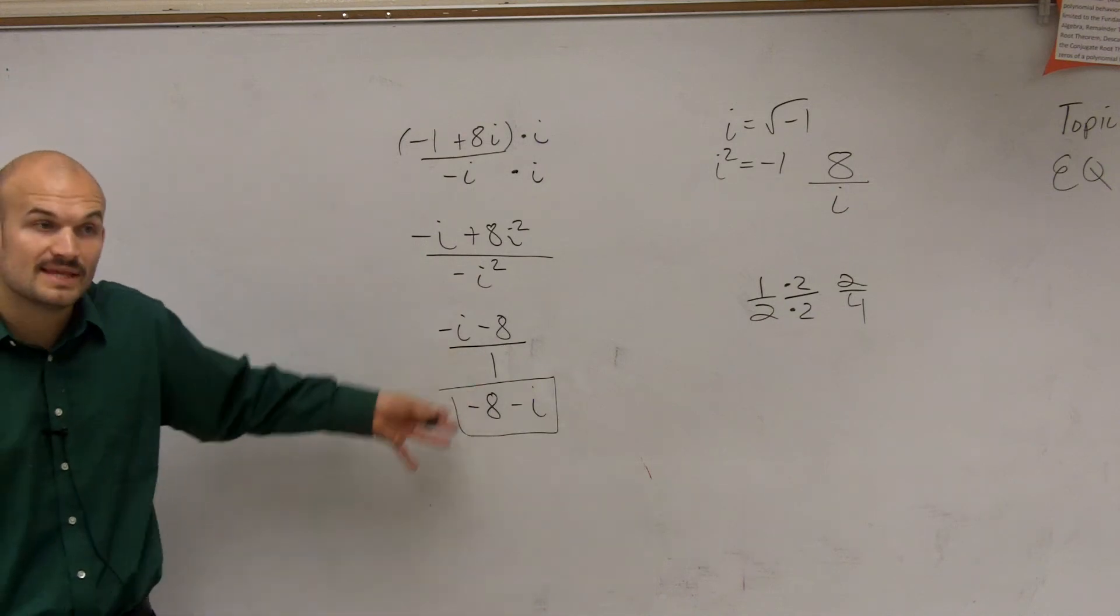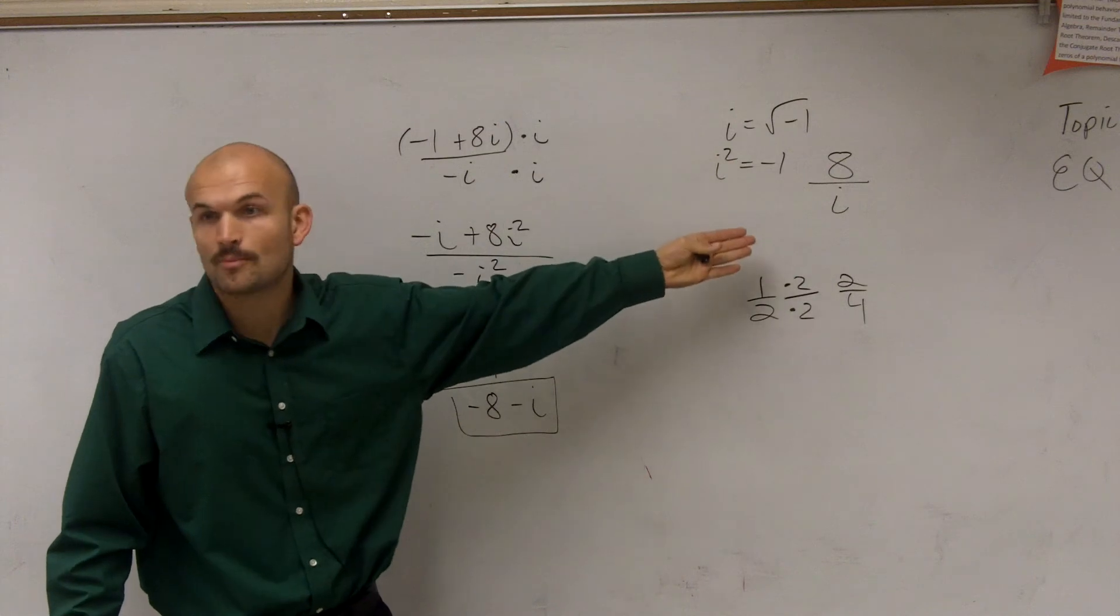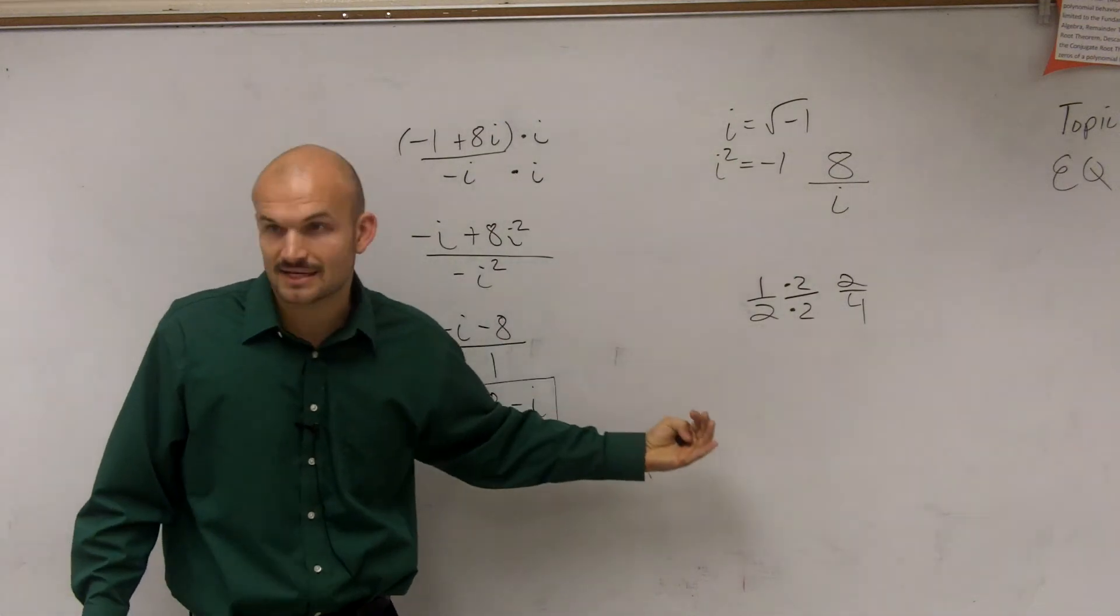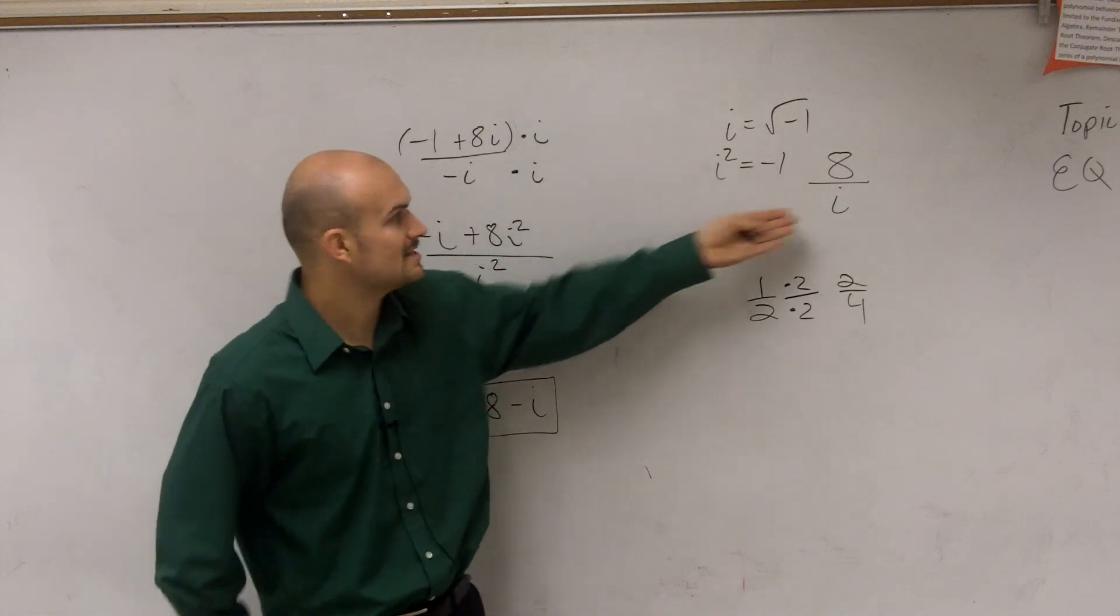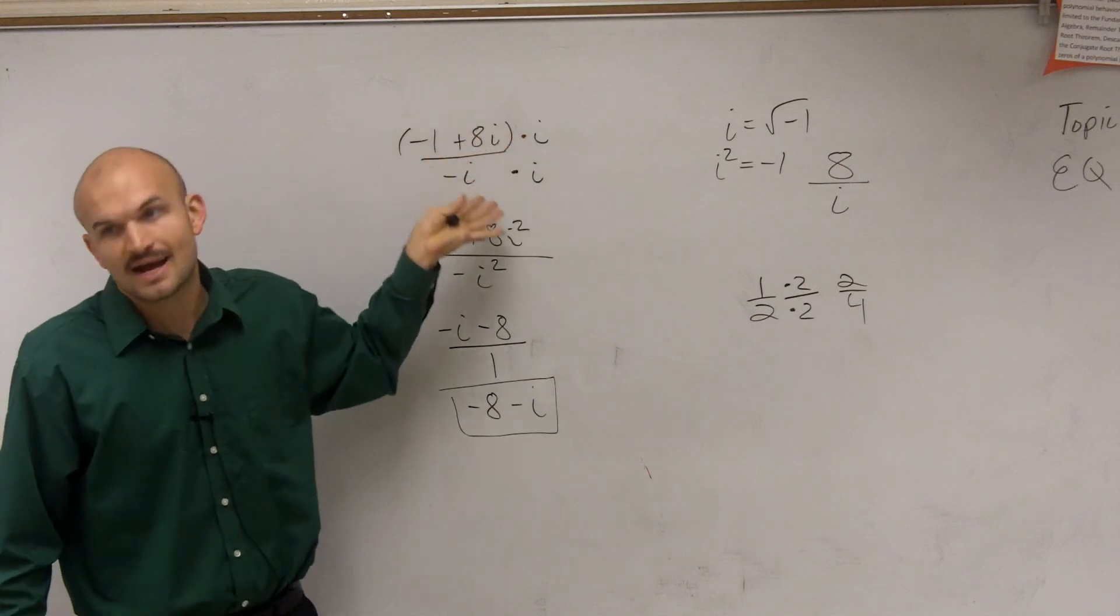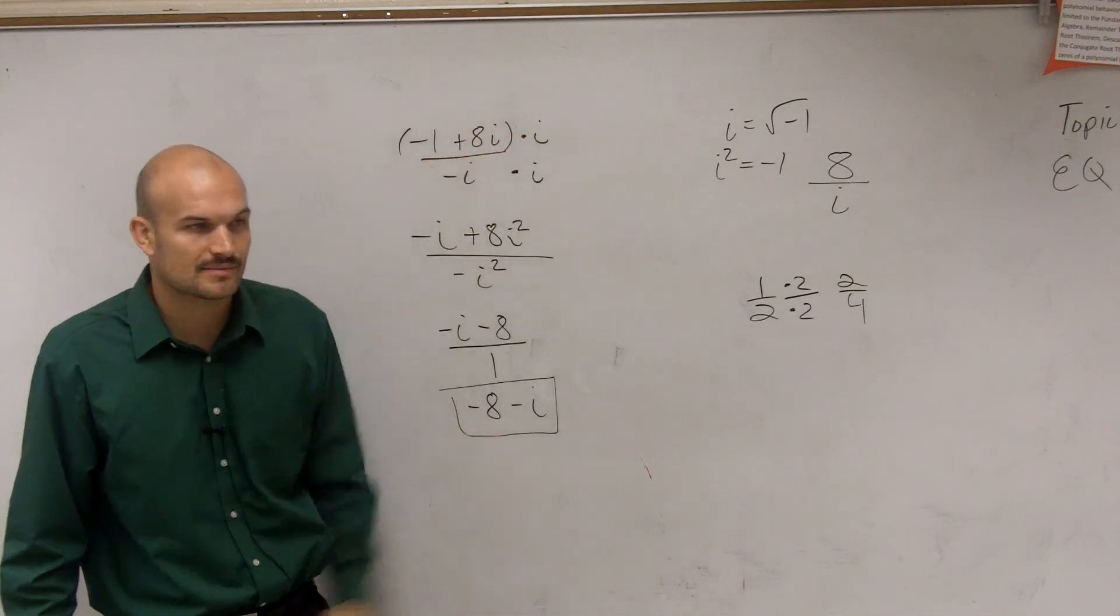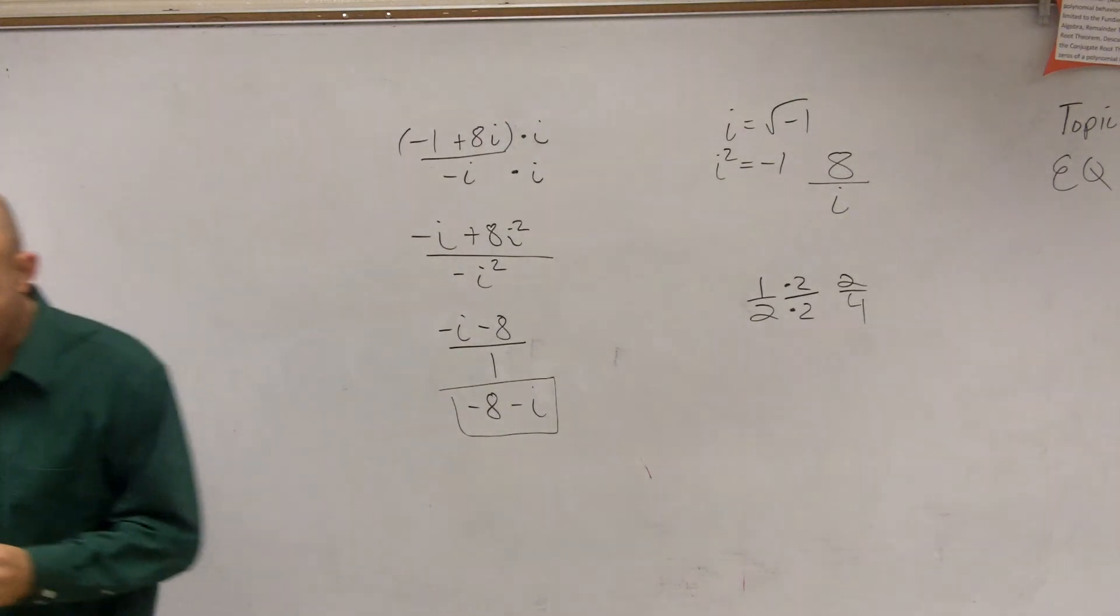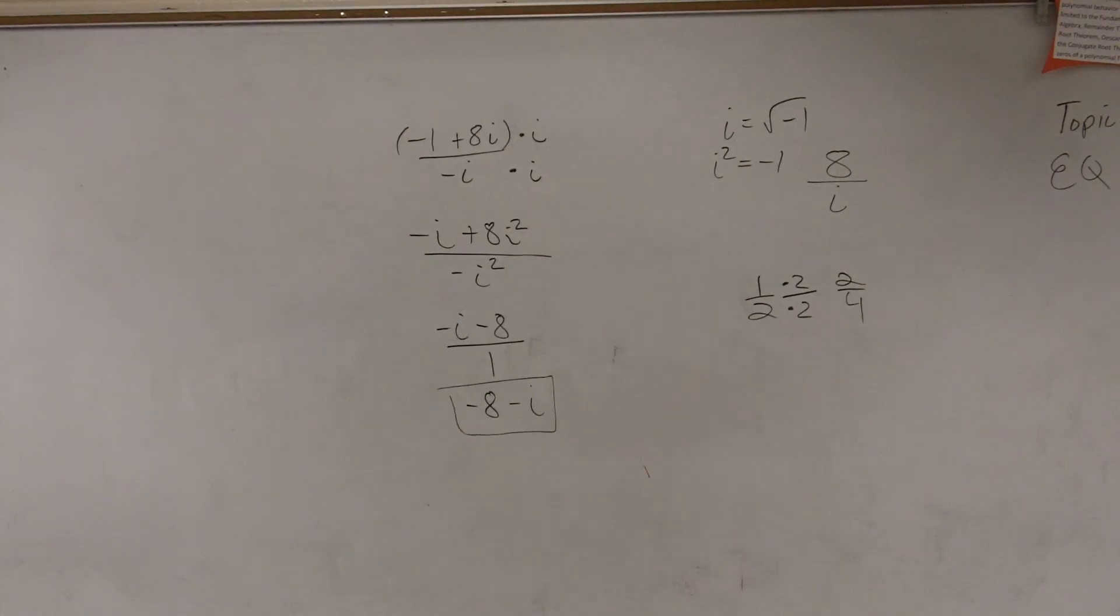And then this is in complex form, which we talked about how to write our problems as a complex number. So we talked about how to write a complex number. That is our preferred method rather than writing it as a complex number divided by an imaginary number or another complex number. All right? That's all you guys got to do. Does that make sense?